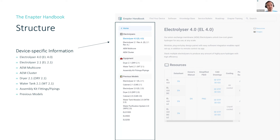On the left side, when you choose 'Find Your Device,' you will have an overview of all the products currently on the market. Our current product is the EL 4.0, the upcoming one is the multi-core, but you'll also find the dryer 2.1 and water tank 2.1. You can also find previous and older models, so if you're an existing customer with older systems, you can still find your information there.